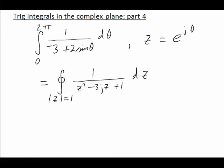In part 3, we investigated the integral from 0 to 2π of 1 over -3 + 2 sin θ. We substituted z = e^(jθ), and we turned it into an integral in the complex plane around the contour |z| = 1, that's the unit circle.